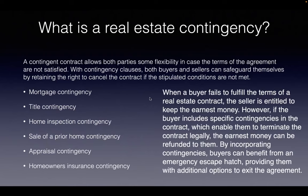When a buyer fails to fulfill the terms of a real estate contract, the seller is entitled to keep the earnest money. If I put earnest money in place and didn't perform and try to walk away, the seller gets to keep it. But if I'm walking away because of a valid contingency, I'm allowed to walk away and get my earnest money returned.